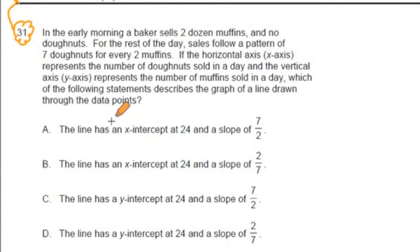The line has—and then they all start with that opening—but then the line either has an x-intercept or a y-intercept of 24 and it either has a slope of 7 over 2 or 2 over 7.